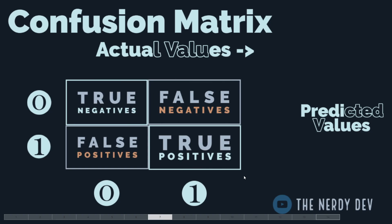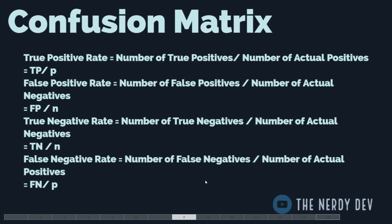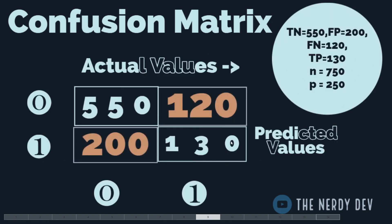Summing elements along the columns: p (actual positives) = False Negatives + True Positives, and n (actual negatives) = True Negatives + False Positives. The key rates are: True Positive Rate = TP/p; False Positive Rate = FP/n; True Negative Rate = TN/n; and False Negative Rate = FN/p.